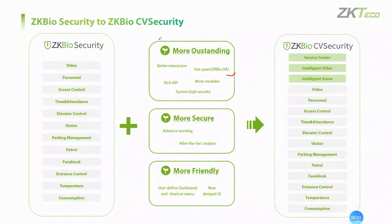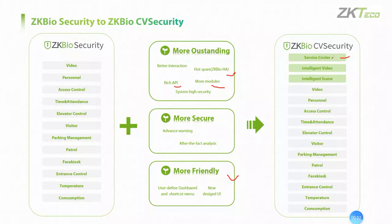Compared with ZKBioSecurity, what is the difference of ZKBioCVSecurity? ZKBioCVSecurity is more outstanding, with better interaction, the ZKBio high-availability horsepower, rich API, more modules, and higher system security. It is more secure with advanced warning and after-the-fact analysis, and more user-friendly with customized dashboards and a new UI, such as dark mode and light mode. In general, it mainly adds three functions: service center, intelligent video, and intelligent scene.